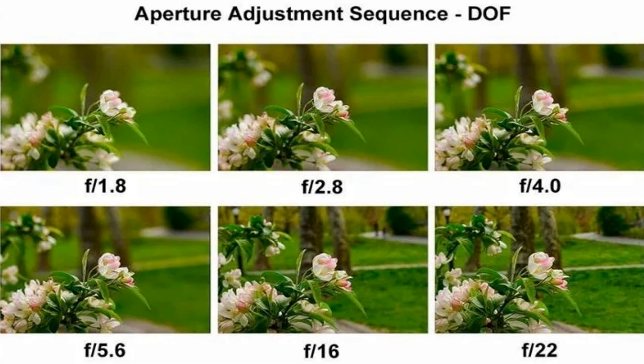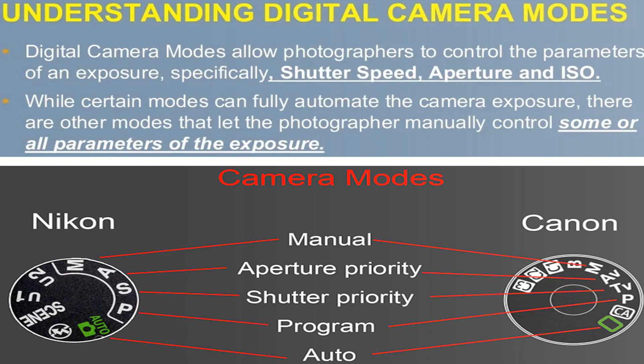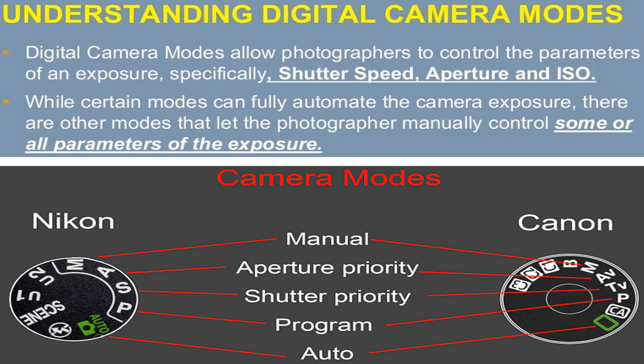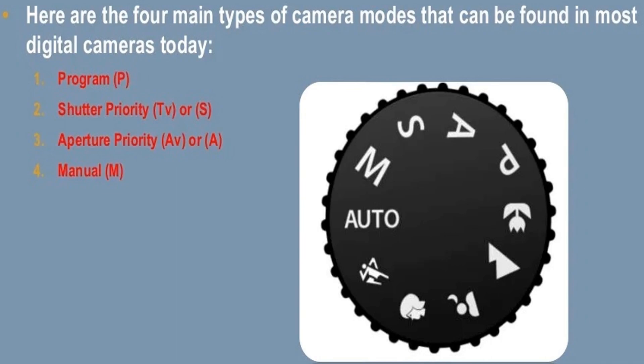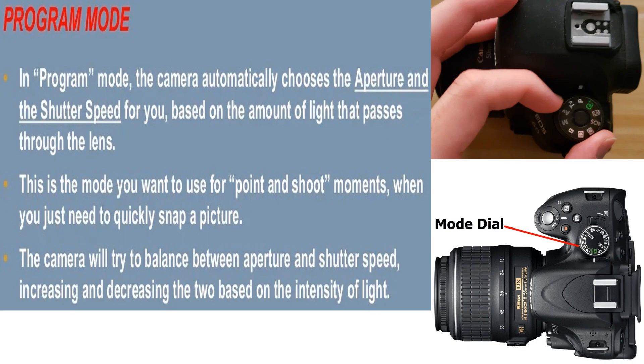Digital camera modes allow photographers to control the parameters of an exposure — specifically shutter speed, aperture, and ISO. While certain modes fully automate the camera exposure, others let the photographer manually control some or all parameters. The four main camera modes found in most digital cameras today are: 1) Program (P), 2) Shutter Priority (Tv or S), 3) Aperture Priority (Av or A), and 4) Manual (M).